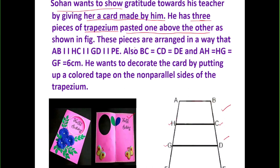It has been given that AB is parallel to HC, which is parallel to GD, and GD is parallel to FE — all these sides are parallel to each other. It is also given that BC equals CD equals DE, and AH equals HG equals FG, with each of these dimensions being 6 cm. Sohan wants to decorate the card by putting a colored tape along the non-parallel sides only.